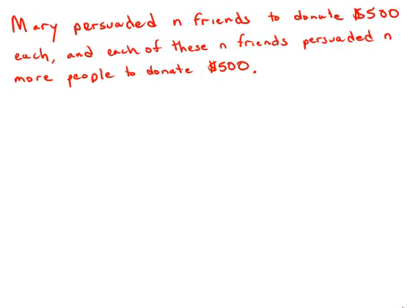Mary persuaded N friends to donate $500 each to her election campaign, and then each of these N friends persuaded N more people to donate $500 each to Mary's campaign. If no one donated more than once and there were no other donations, what was the value of N?